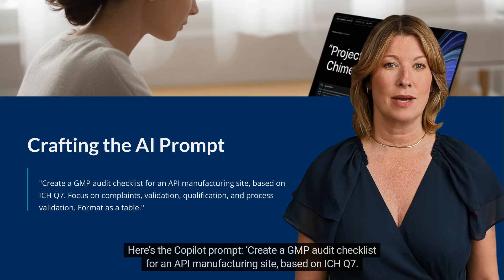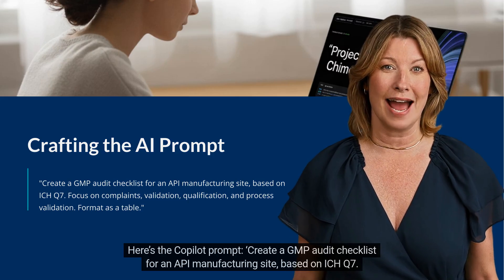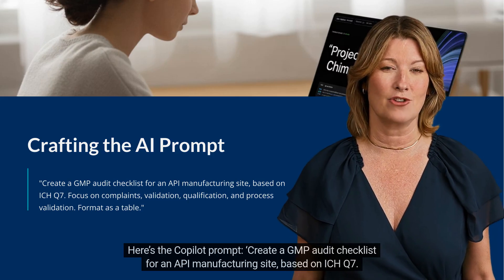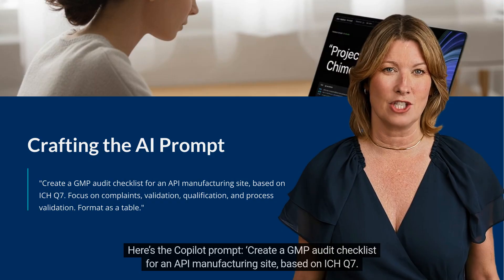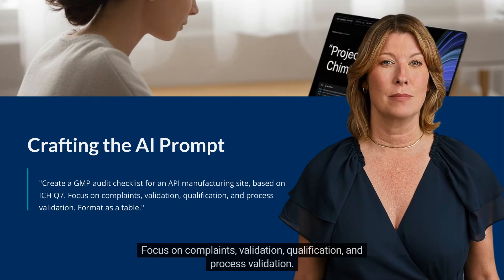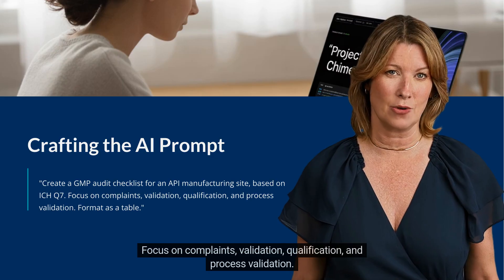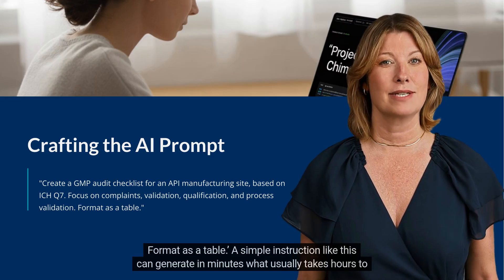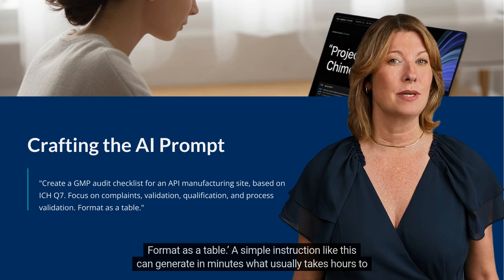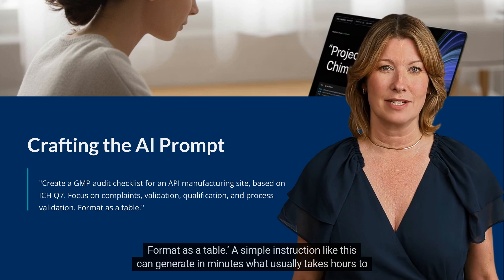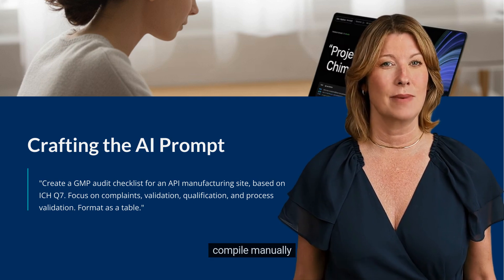Here's the Copilot prompt: Create a GMP audit checklist for an API manufacturing site based on ICH Q7. Focus on complaints, validation, qualification, and process validation. Format as a table. A simple instruction like this can generate in minutes what usually takes hours to compile manually.